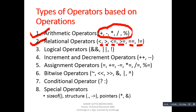The third type is logical operators. In this category, we have three symbols: first is logical AND, second is logical OR, and third is logical NOT. These operators are used to join more than one condition.